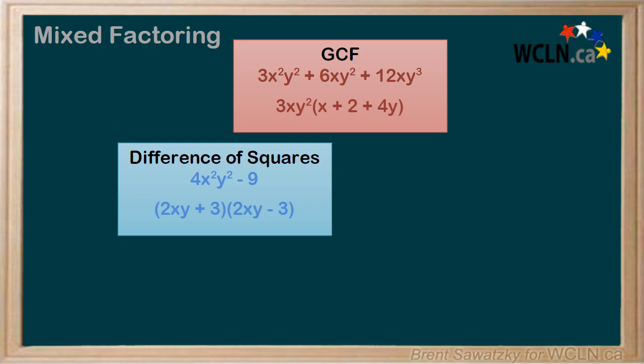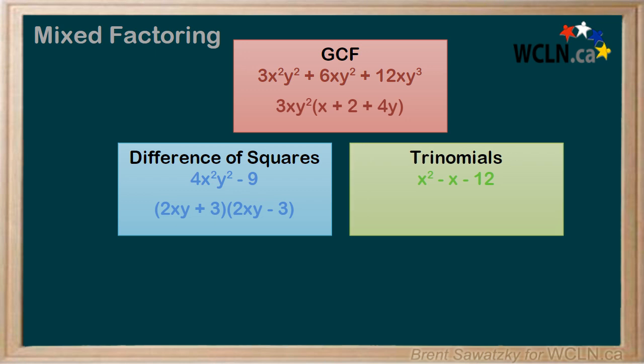You also recognize and factor trinomials. For example, we have an x squared term, an x term, and a constant at the end. Now, many times there's just a one coefficient in the first term, but if not, we just call it a messy trinomial. For a clean trinomial, we think a number that adds to the middle coefficient, negative one in this case, and multiplies to the constant, negative 12 in this case. So we think three and negative four would work. So we plug those in, and it's factored.